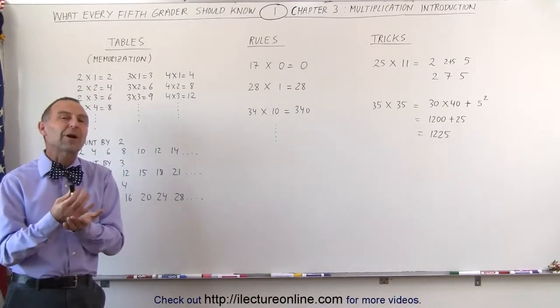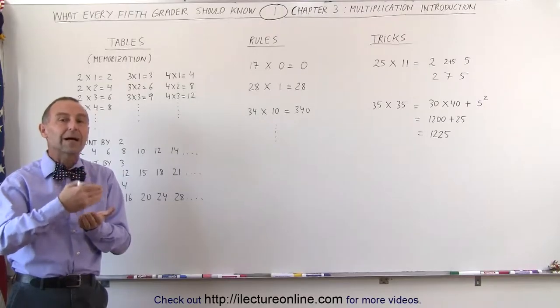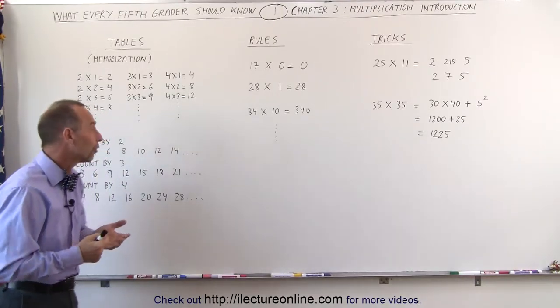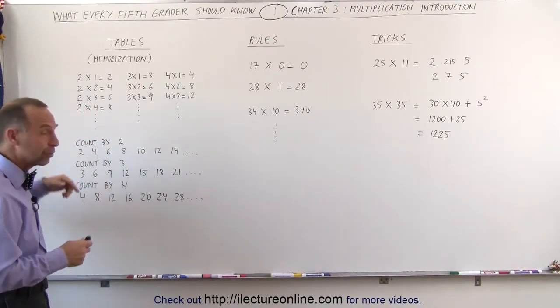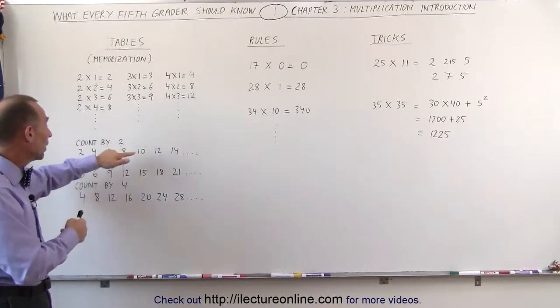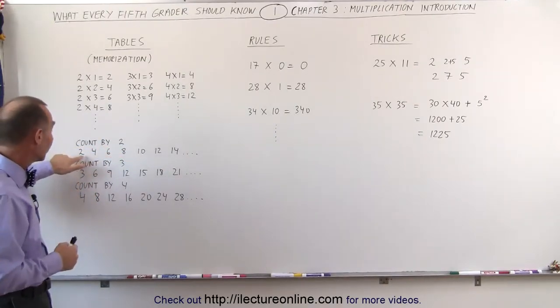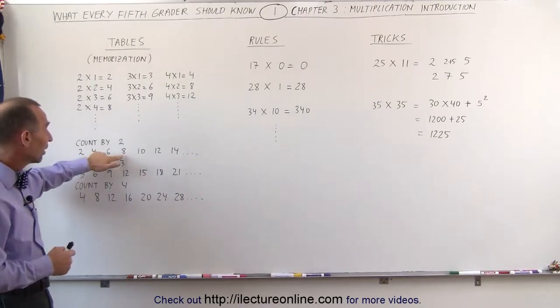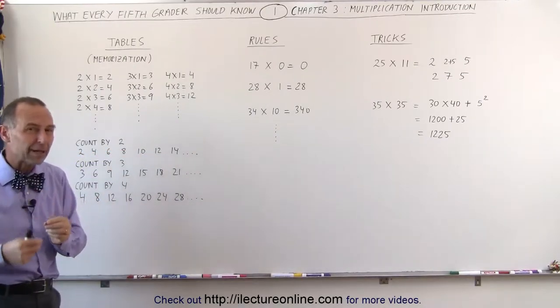Another thing that helps you memorize the tables is to count by 2, to count by 3, and so forth. For example, you try to memorize the numbers from 2 to 20. So you think to yourself, 2, 4, 6, 8, 10, 12. That's what we mean by counting by 2.